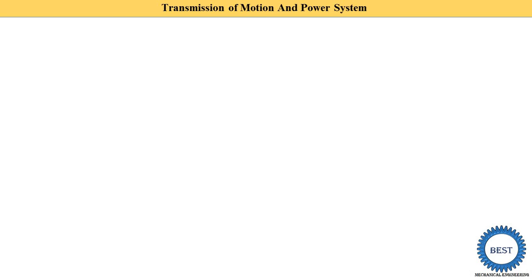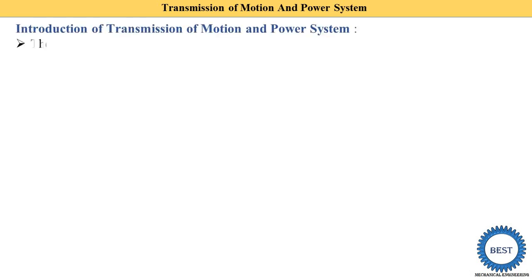Since we are discussing basic mechanical engineering, we focus on mechanical power. Mechanical power generally means rotational energy. Transmission means the transfer of power or motion from one machine component to another machine component.